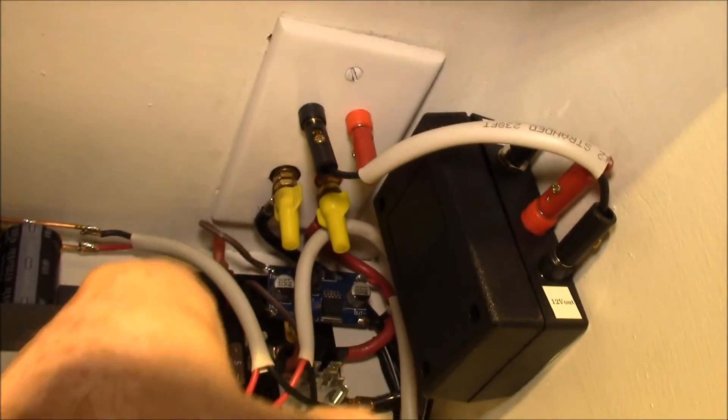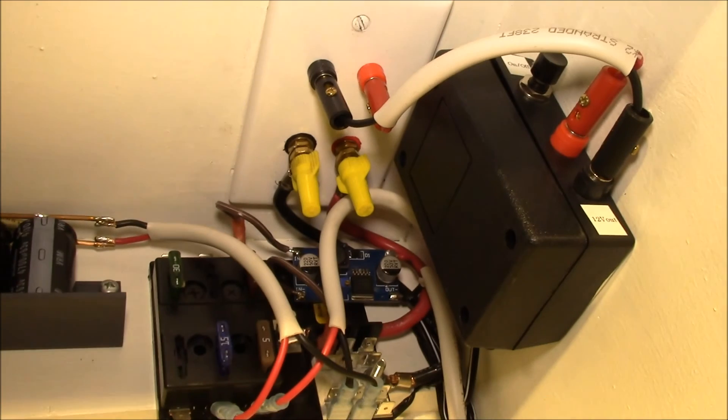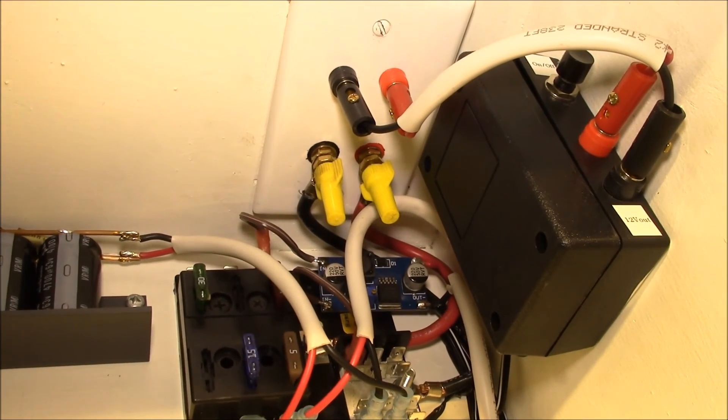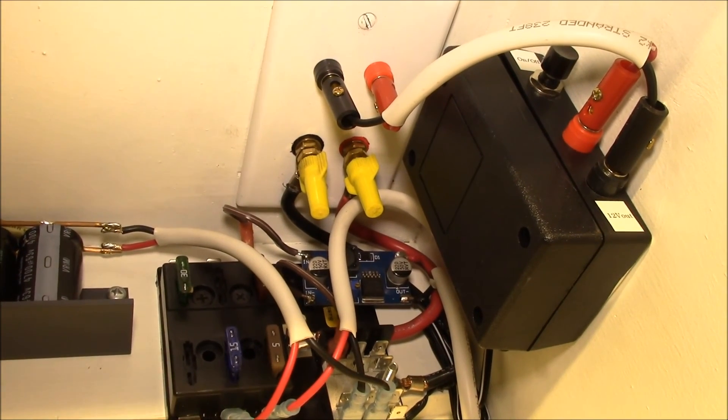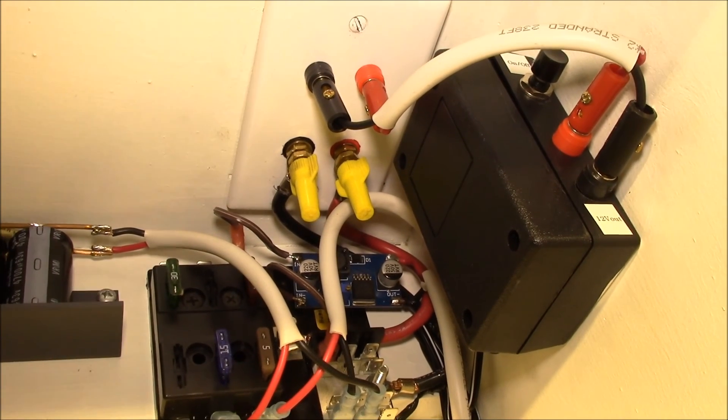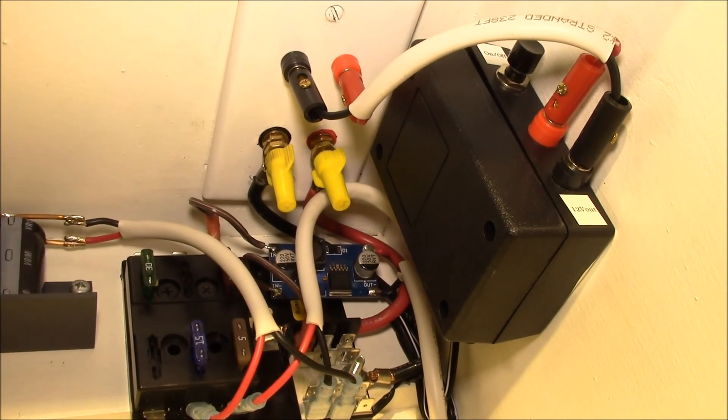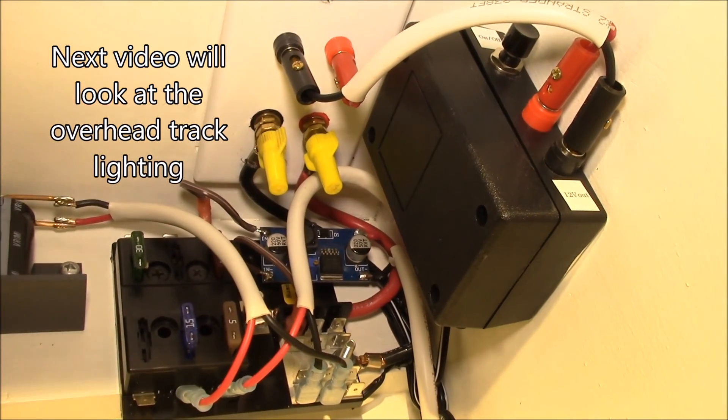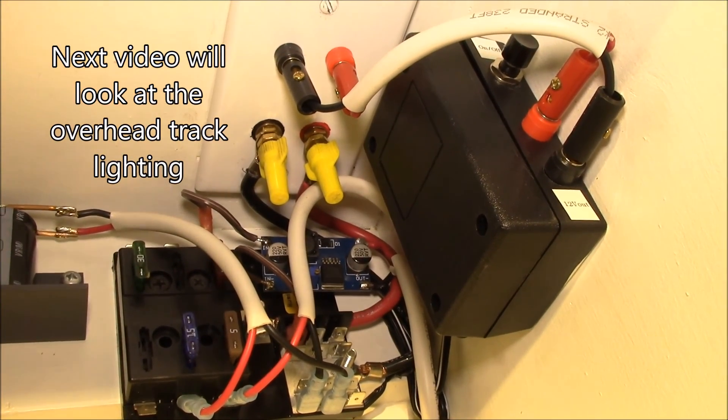The two yellow posts are the power coming in from my solar battery bank. I have 10 gauge wire that comes through the attic and then these two red and black wires feed my overhead lighting.